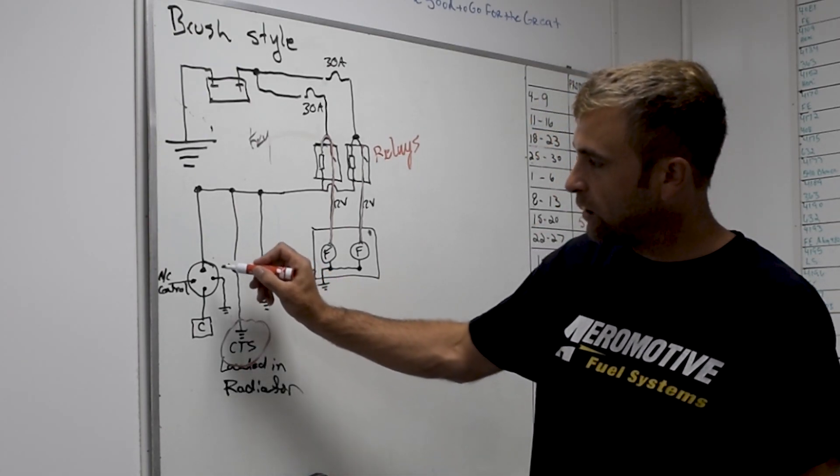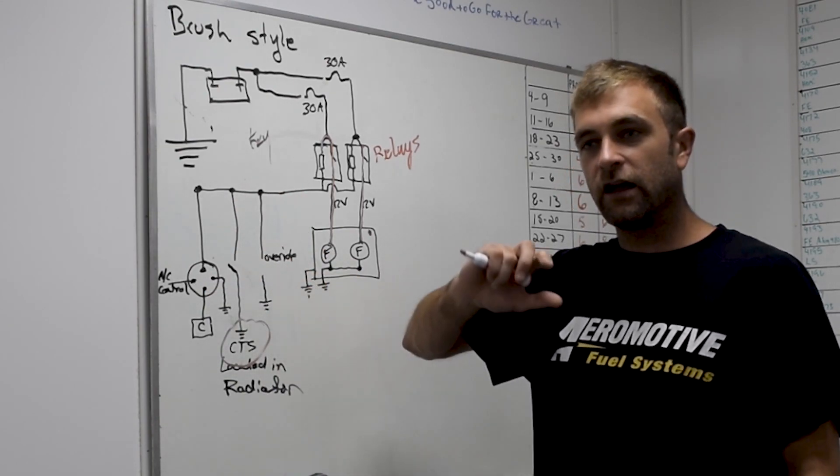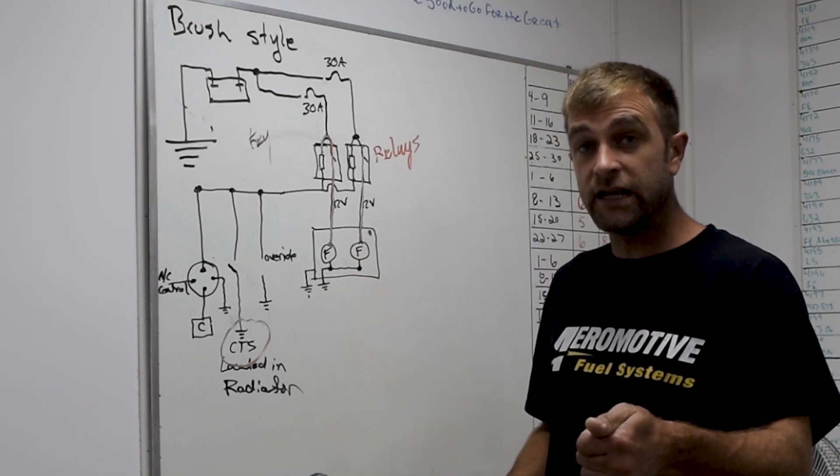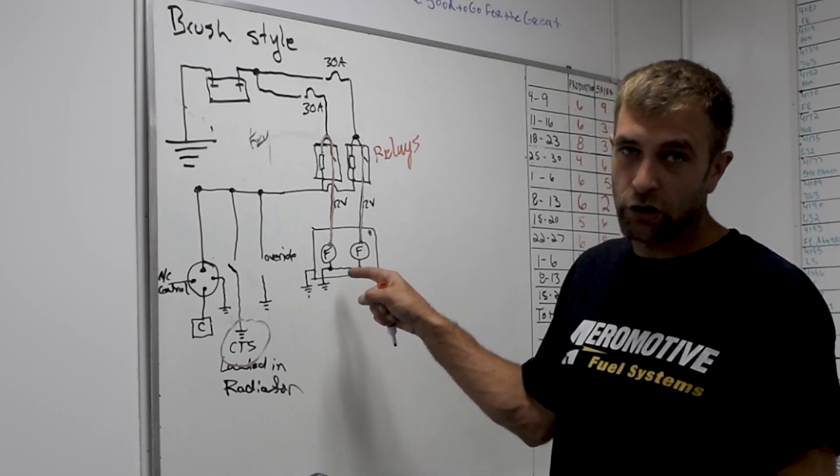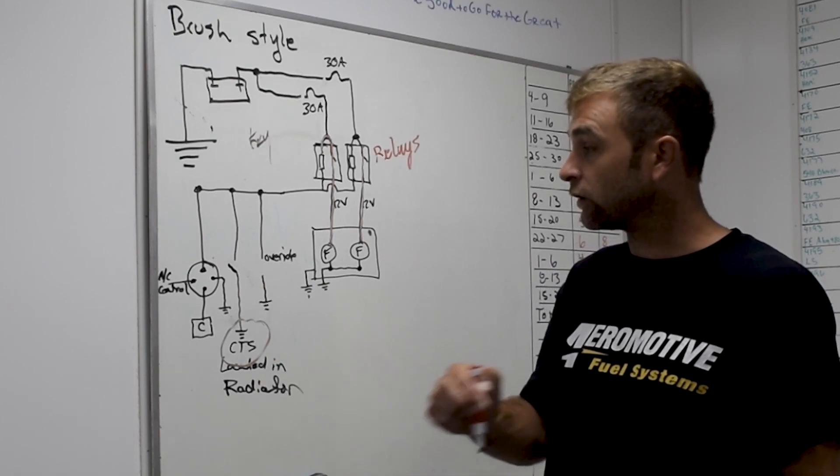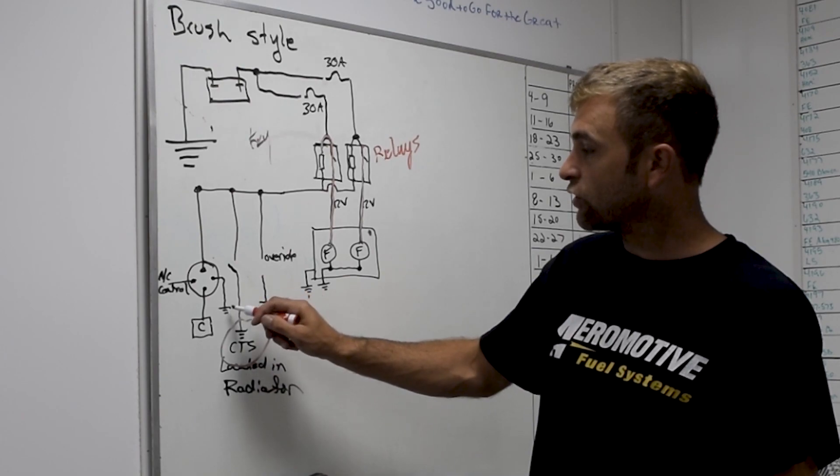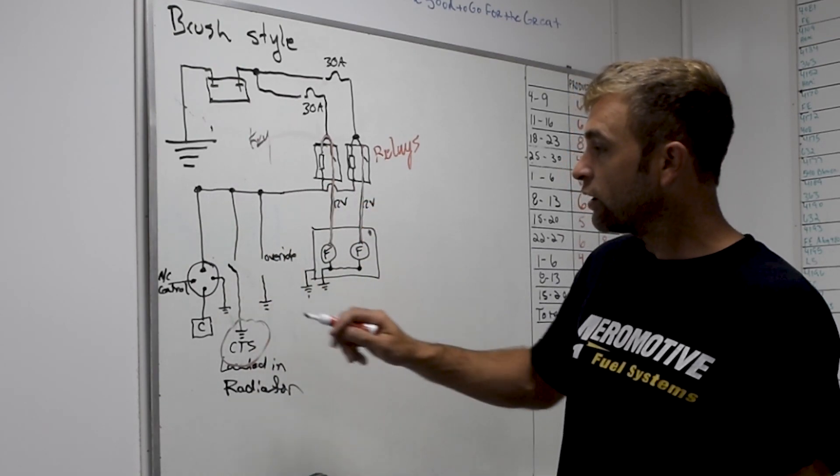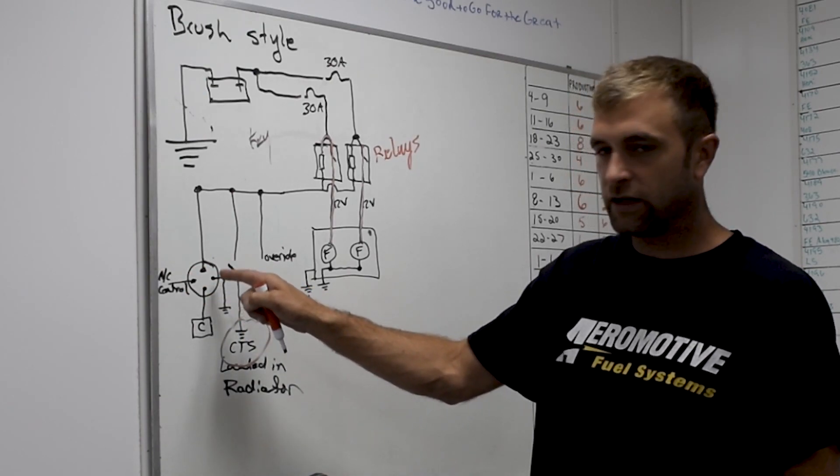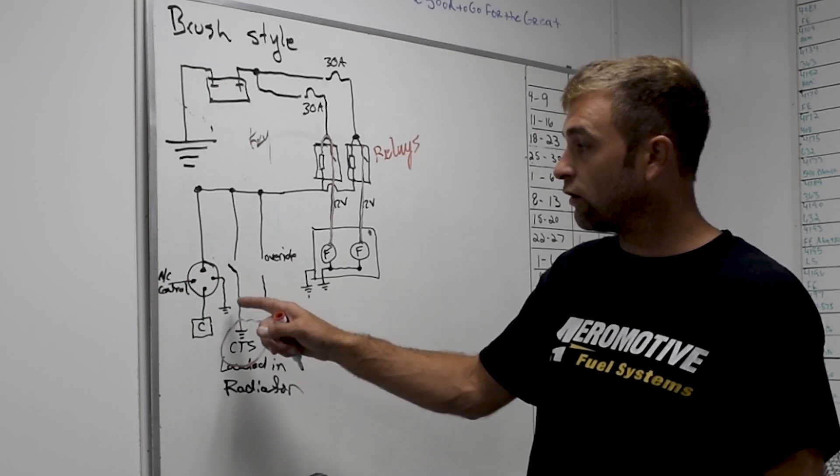So a couple of extra little things to think about that people normally don't look at is going to be the tri-inary switch for the AC. That obviously, if the engine's cold and we just fired it up but it's a hot day and we kick our AC on, we need the fans to turn on so the AC cools correctly so we can get the air running through the condenser. So we use a tri-inary switch and obviously, this tri-inary switch is going to provide the ground signal when the AC control comes on.